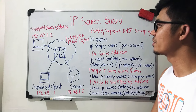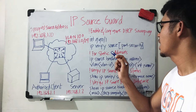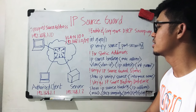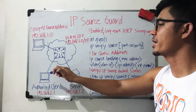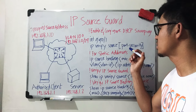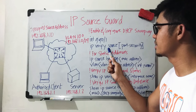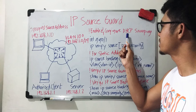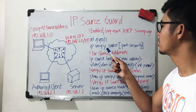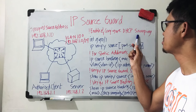We can configure IP Source Guard on an interface by doing 'ip verify source'. This causes the switch to check the source IP address coming from any host on the network. If we also need to check the MAC address, we can add port security. The switch is going to do this by checking its DHCP snooping binding database.